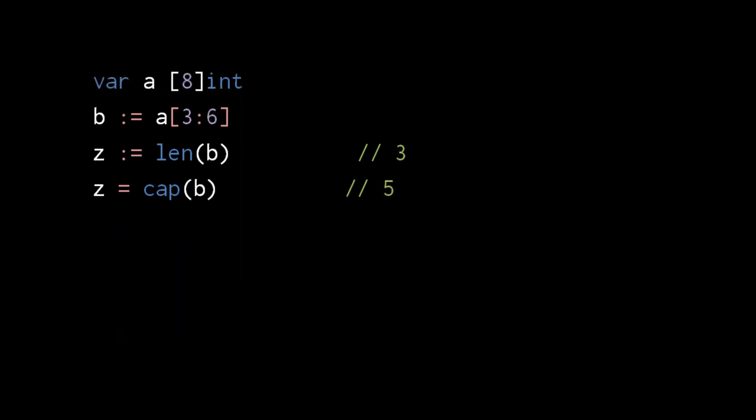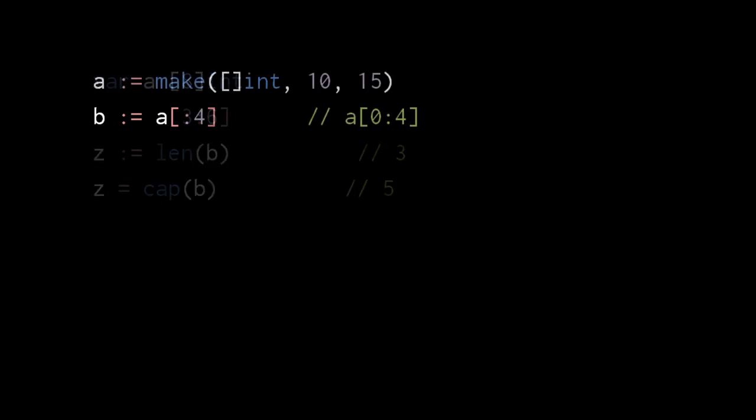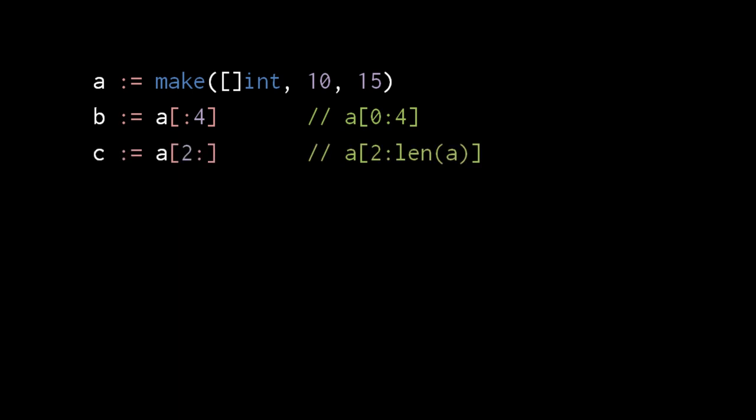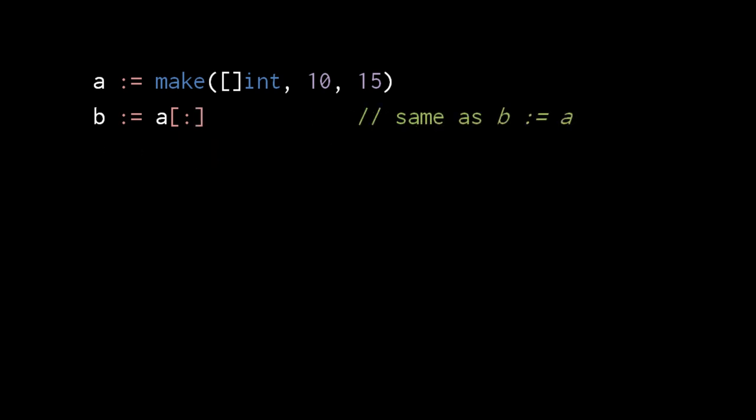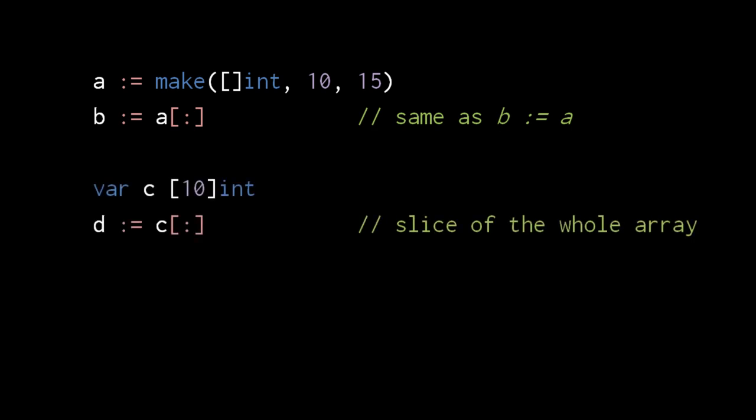We can use this range operator to create new slices from arrays as well as other slices. The new slice here points to the array but with an offset of 3. If we omit the number on the left side of the colon it defaults to 0. If we omit the number on the right side it defaults to the length of the original slice or array. So if we omit both numbers and just write a colon, we're creating a new slice that covers the whole length. When used on a slice this is the same as copying the slice by assignment, but for an array it conveniently gets us a slice representing the array.